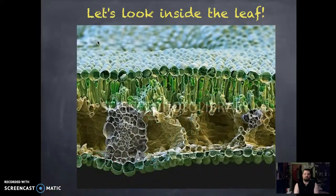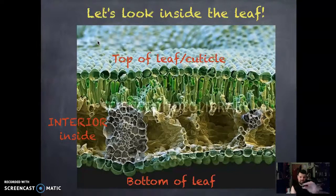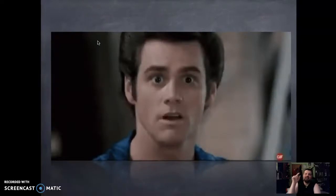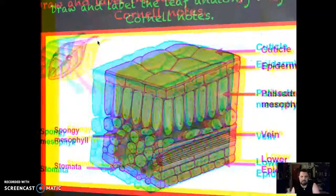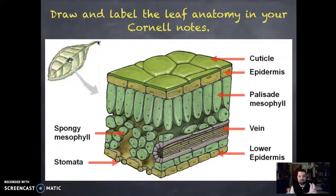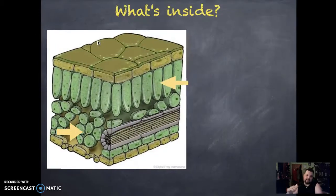Now let's look at a cross-section SEM image — imagine the leaf was cut like a cake and we're looking inside. This cross section shows us the top cuticle layer, and then we go into the middle interior. All those little structures you're seeing have a purpose. Kids, please pause here and draw the anatomy or cross-section of this leaf in your Cornell notes on the right-hand side. You don't have to label it, but draw it well — use some color if you want.